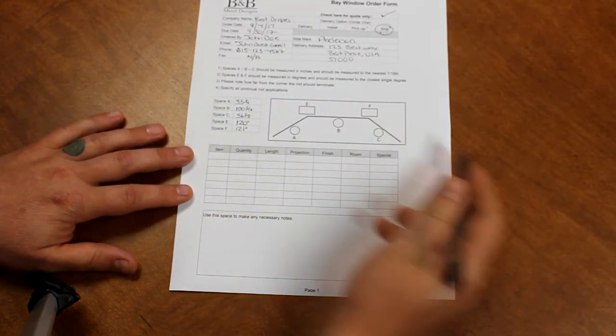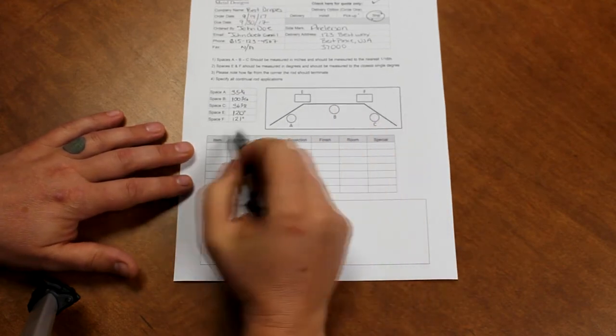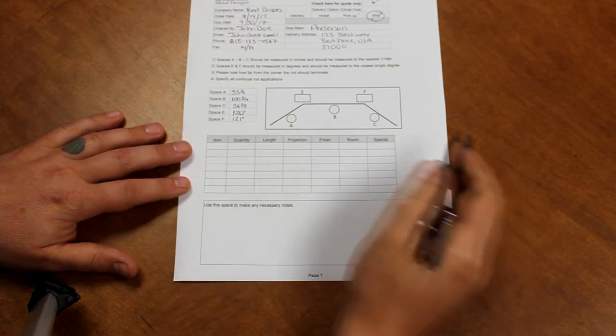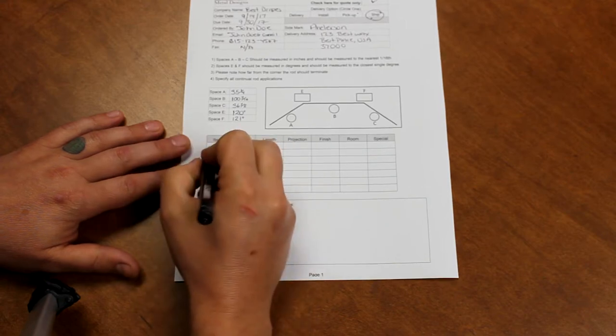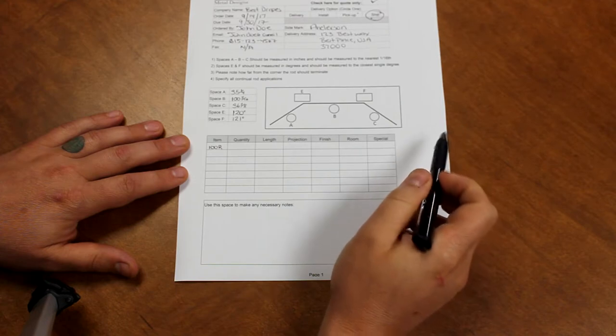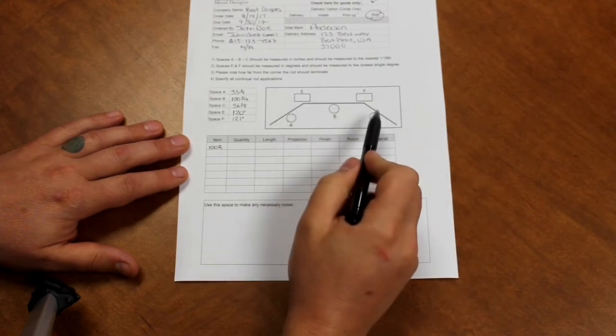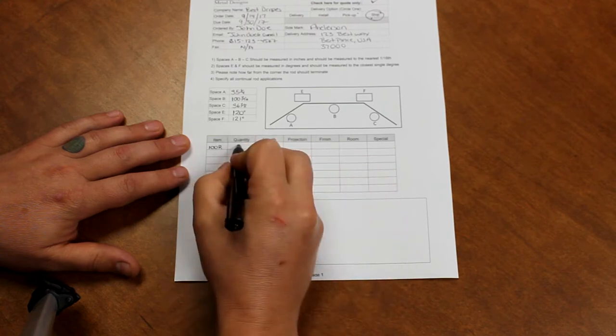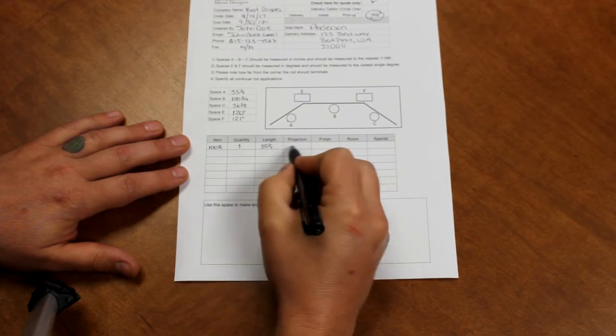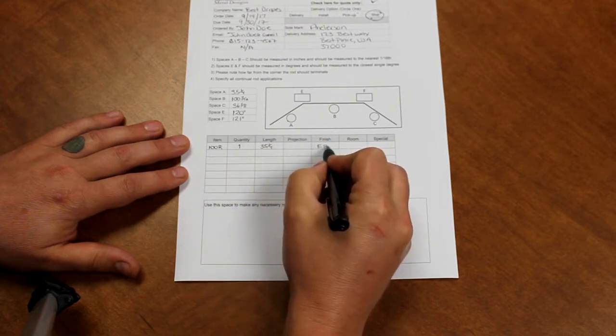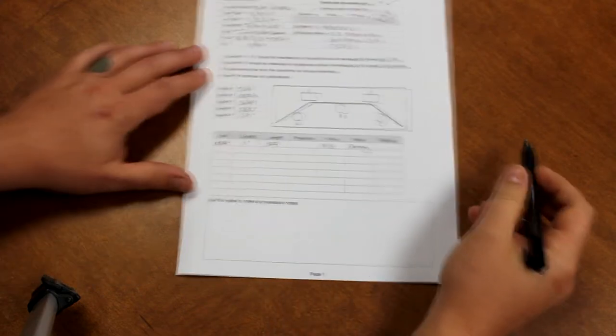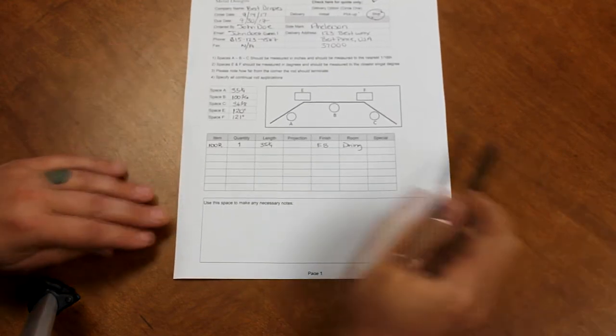From there since we have all that written in our diagram we can start taking our order for the rods themselves and the hardware. We will start with the rods which our item number for that is 100R for our 1 inch standard round rod. Our quantity will be 1. Length will be 35 and a quarter. Projection is unnecessary. Finish will be English brown. The room is the dining room. And then from there we will go to space B which is in the center.